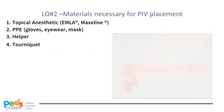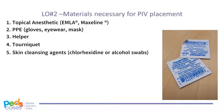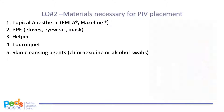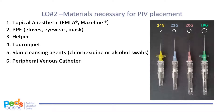Fourth, a tourniquet. Fifth, skin cleansing agents — common options are chlorhexidine or alcohol swabs. Sixth, you will need a peripheral venous catheter of appropriate size. Typically, you will use an over-the-needle catheter with the gauge ranging from 24 in newborns to 18 in older children. Remember, the larger the gauge number, the smaller the diameter of the needle and catheter.